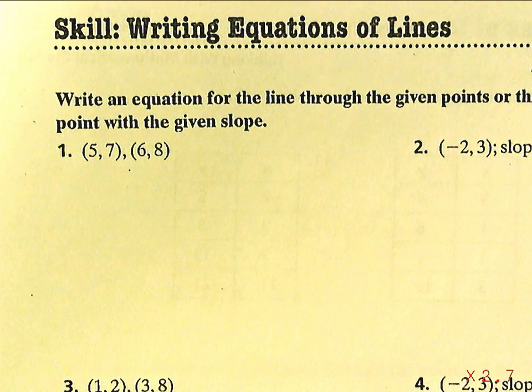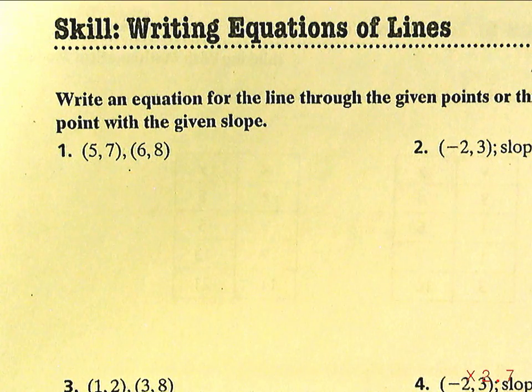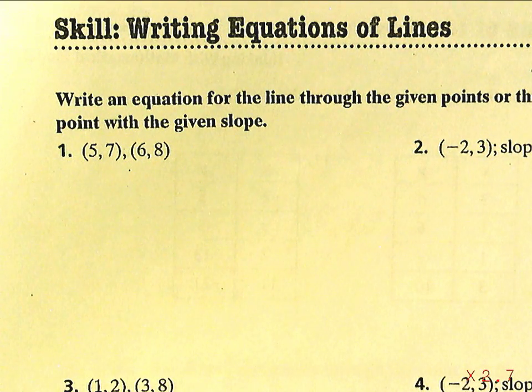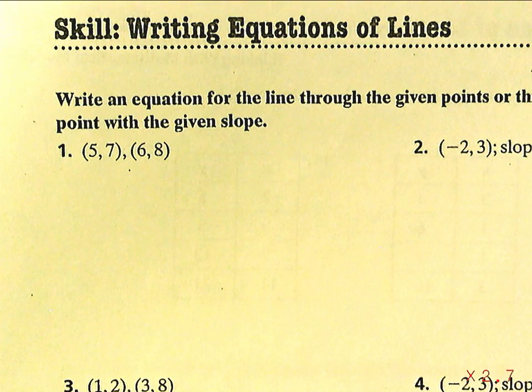This is from Investigation 2 in Thinking with Math Models, the additional practice packet, section called Skills: Writing Equations of Lines, page 18. What we're doing is we're given either two points or a slope and a point, and from that information we should be able to, without graphing, find the equation of the line.